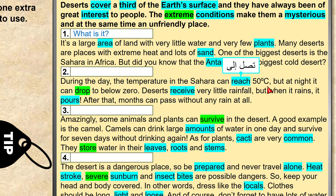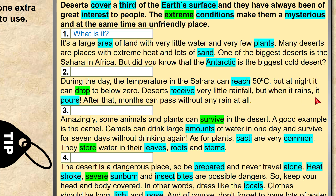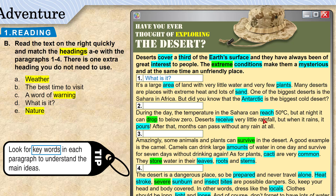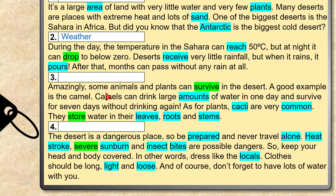During the day, the temperature in the Sahara can reach 50 degrees Celsius, but at night it can drop to below zero. Deserts receive very little rainfall, but when it rains it pours — very heavy rain. After that, months can pass without any rain at all. Rains are rare, but when it rains, it rains heavily. The keywords here — temperatures, 50 degrees Celsius, drop to below zero — tell us this paragraph is about weather, heading A.